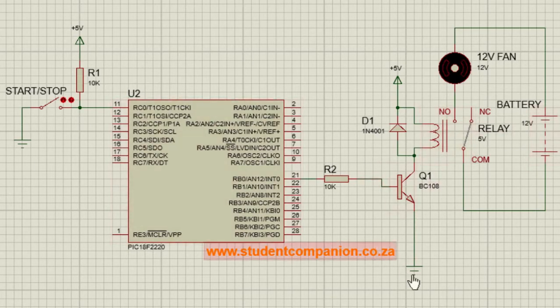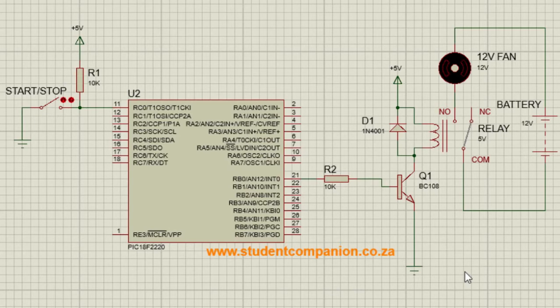If possible, the relay should always be powered by a separate power supply. This enables the connection of a relay requiring a different voltage — like for example a 12-volt relay — which is different from the 5 volts supplied to the microcontroller.